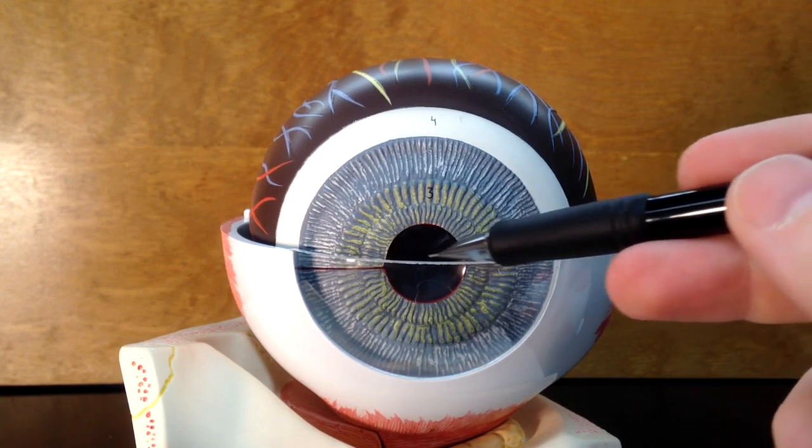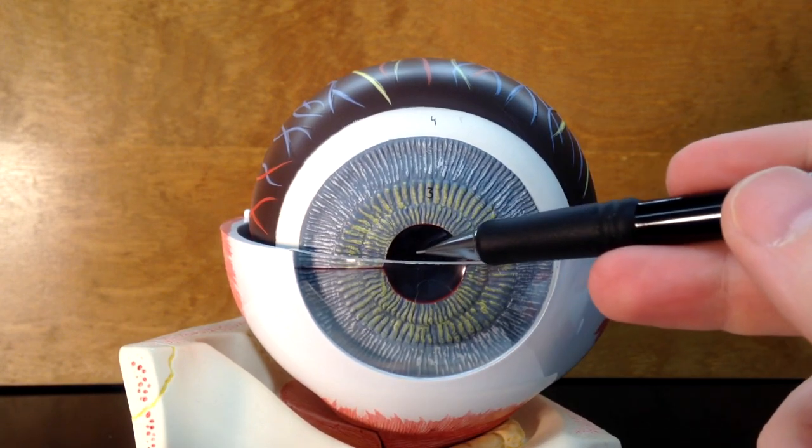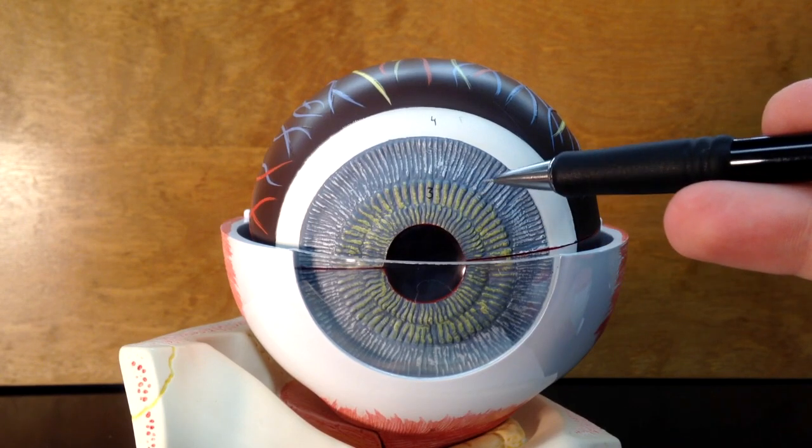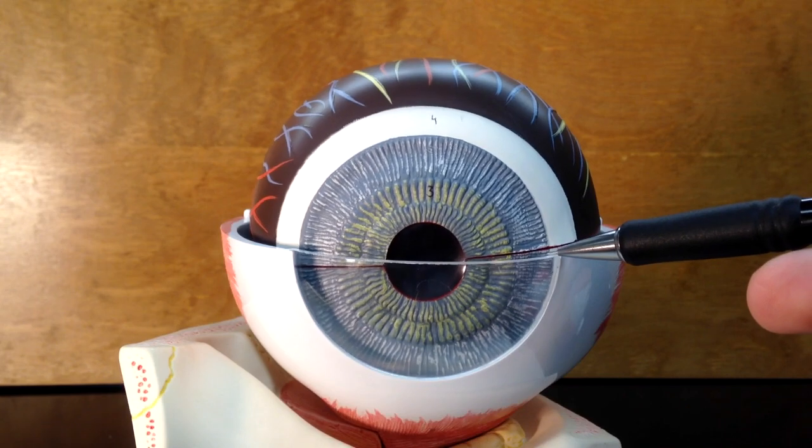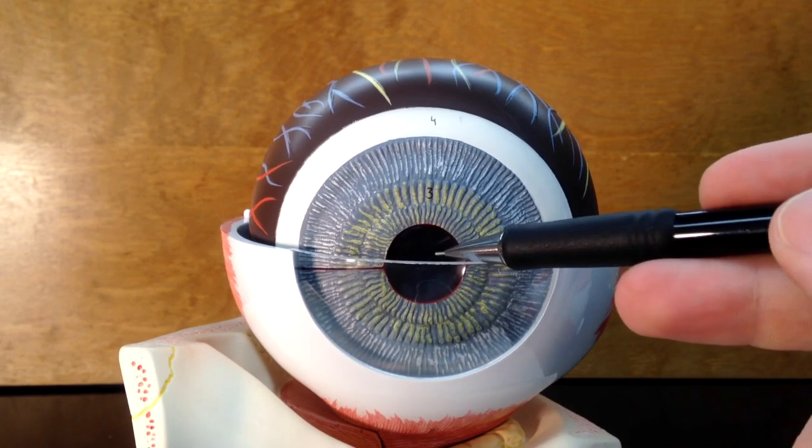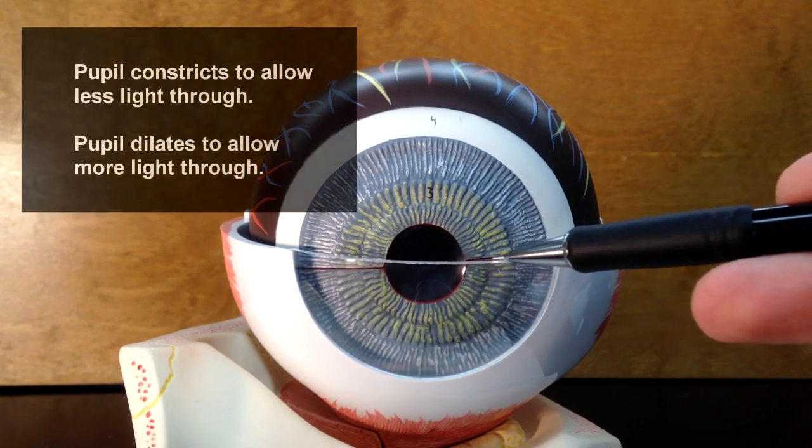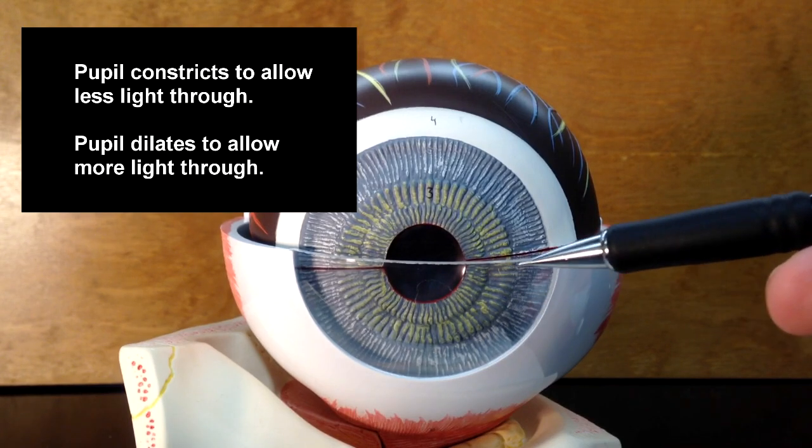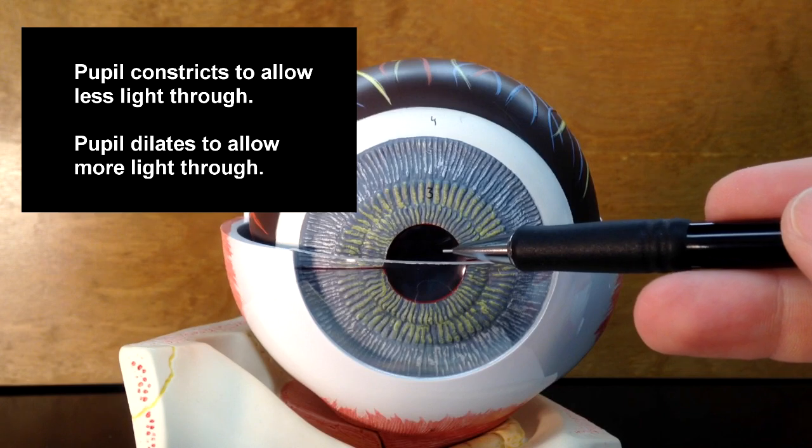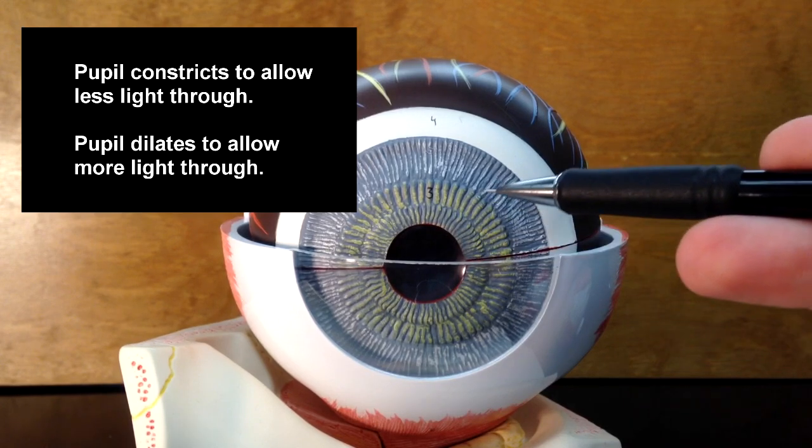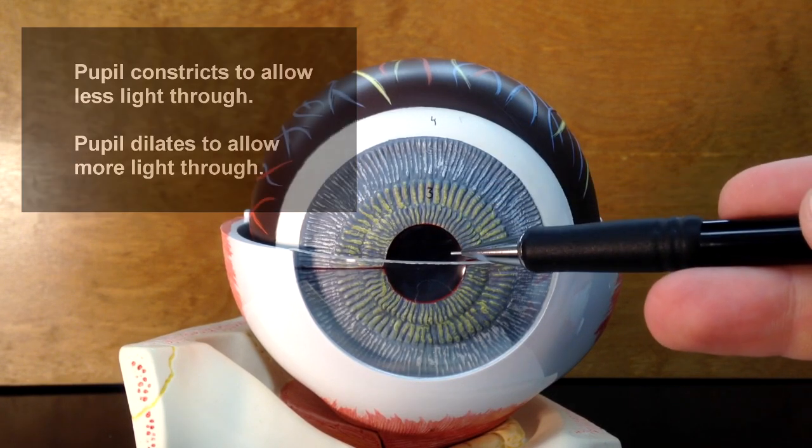This pupil can change sizes. It can get smaller or larger because of the muscles in the iris here. And that pupil will change sizes based on various conditions. If you want to allow less light into the eye, the pupil will constrict. If you want to allow more light into the eye, the pupil will get wider or dilate.